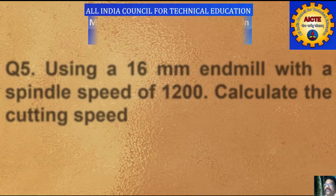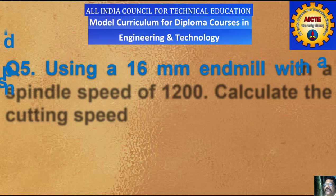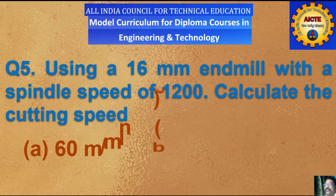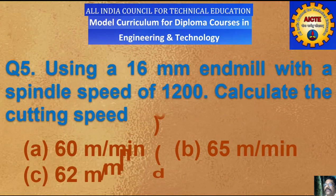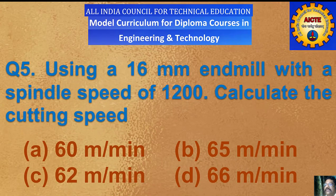Question number 5: using a 16 mm end mill with a spindle speed of 1200 rpm, calculate the cutting speed. A) 60 m per minute, B) 65 m per minute, C) 62 m per minute, D) 66 m per minute.